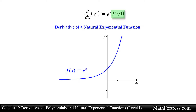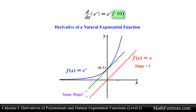Looking at the graph of the natural exponential function, we need to find the tangent line to the curve at x equals 0, that is at the point (0, 1). The tangent line through (0, 1) is the green line, which looks like the line y equals x. Graphing f(x) equals x, we see the tangent line and f(x) equals x are parallel, meaning they have the same slope. Since the slope of f(x) equals x is 1, the slope of the tangent line is also 1, so f prime of 0 equals 1. Substituting this result, the derivative of the natural exponential function is equal to itself — one of the easiest derivatives in calculus.